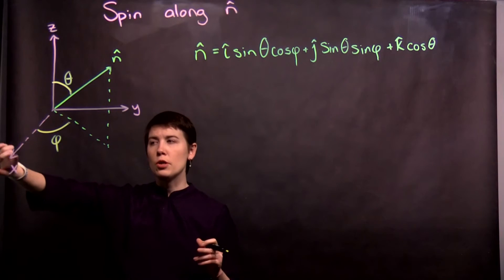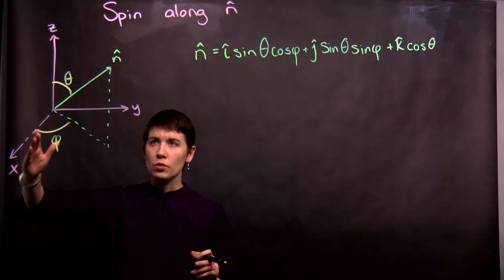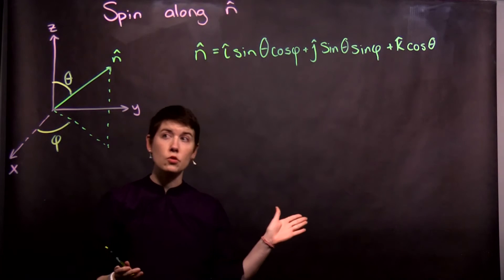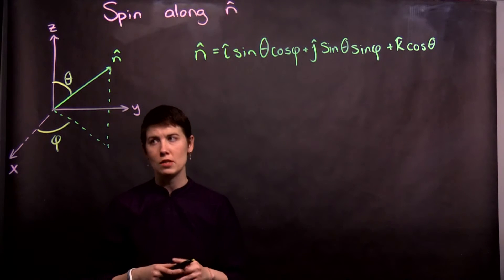So one thing to note is that x is kind of the one coming out of the board at you. Y is here, z is up. So you can always check and do x cross y should give you z to make sure you've drawn a right-handed coordinate system.